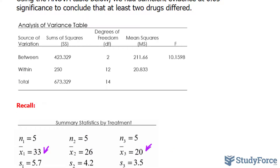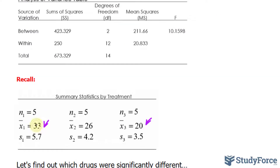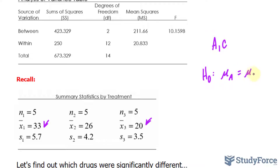We will begin with drug A and drug C because drug A has the largest mean and drug C has the smallest mean, so we start with groups one and three. The null hypothesis, just as with the Scheffé procedure, is that the mean of the population for drug A is equal to that of drug C. The alternative is that they are not equal. If we end up rejecting the null hypothesis, then we continue with the test.